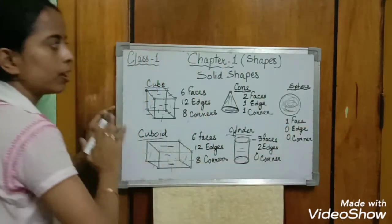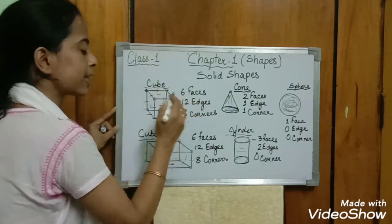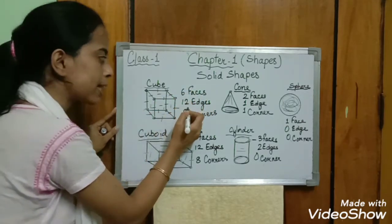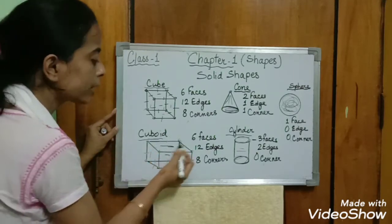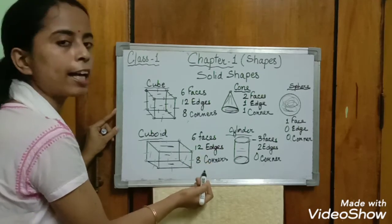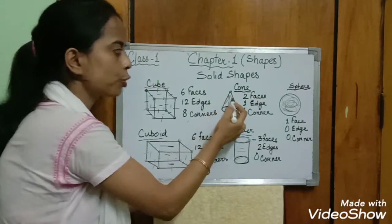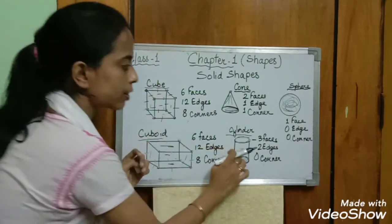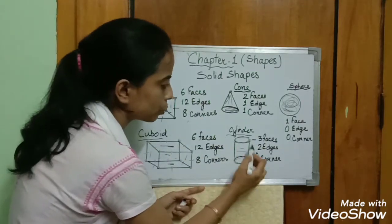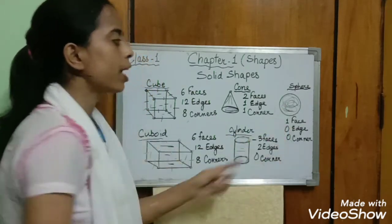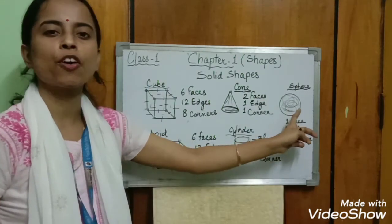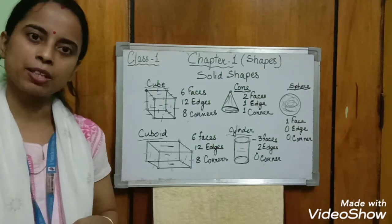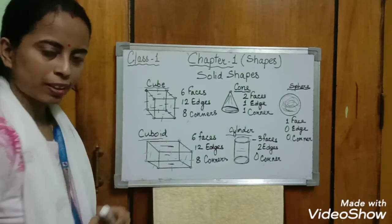So these are the solid shapes with their faces, edges, and corners. To summarize: cube — six faces, twelve edges, eight corners. Cuboid — same: six faces, twelve edges, eight corners. Cone — two faces, one edge, one corner. Cylinder — three faces, two edges, no corners. Sphere — one face, zero edges, zero corners. Just as you learned the sides and corners of plane shapes, today I have taught you the faces, edges, and corners of solid shapes. Kindly learn this at home. Thank you.